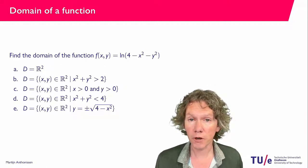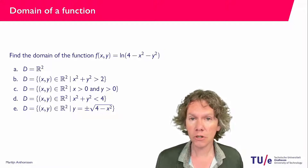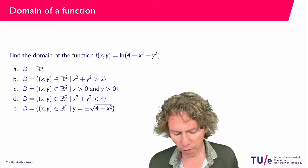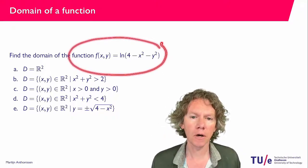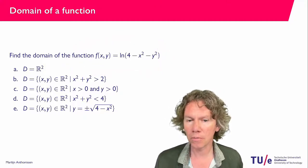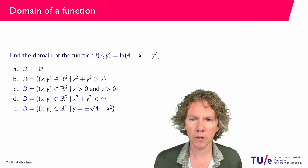Welcome to this video. Here we will consider the question that you see on the slide behind me. So we are given a function f of two variables x and y and the function is the logarithm, the natural logarithm of 4 minus x squared minus y squared.